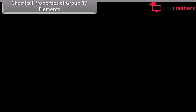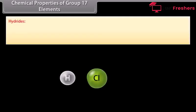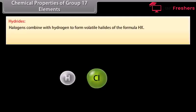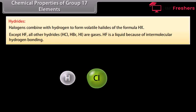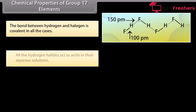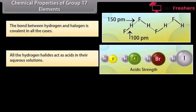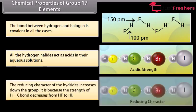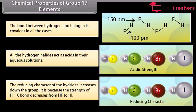Halogens combine with hydrogen to form volatile halides of the formula HX. Except HF, all other hydrides HCl, HBr, HI are gases. HF is a liquid because of intermolecular hydrogen bonding. The bond between hydrogen and halogen is covalent in all cases. All hydrogen halides act as acids in aqueous solution, ionizing to give H+ ion and halide ion X−. The reducing character of the hydrides increases down the group because the strength of the HX bond decreases from HF to HI.